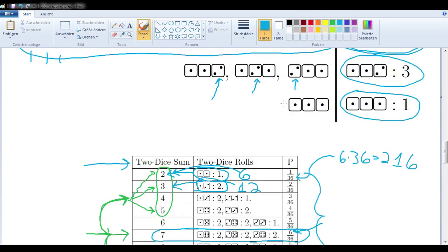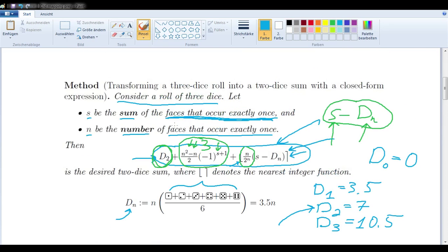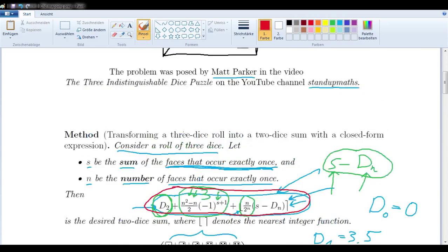So there's the proof. We found a closed form expression, this one right here, to solve the 3 indistinguishable dice puzzle.